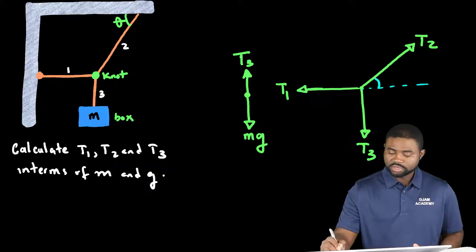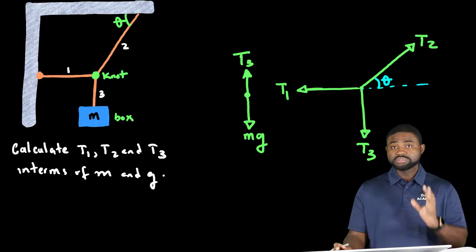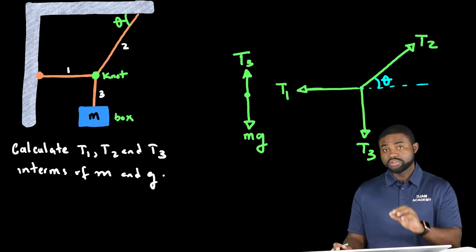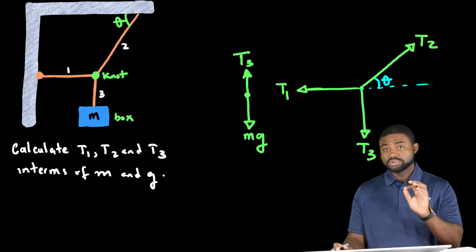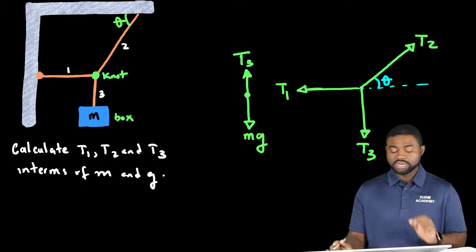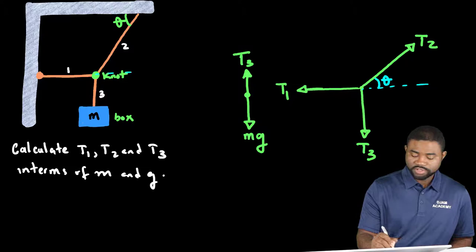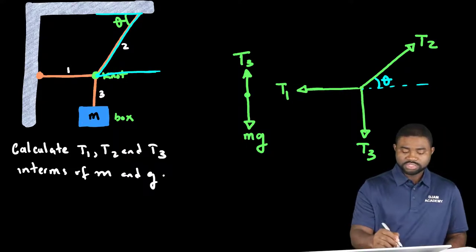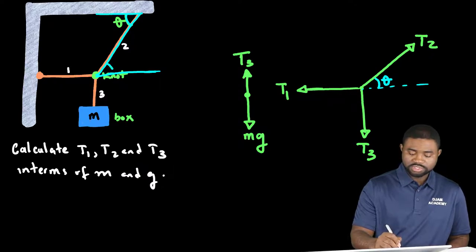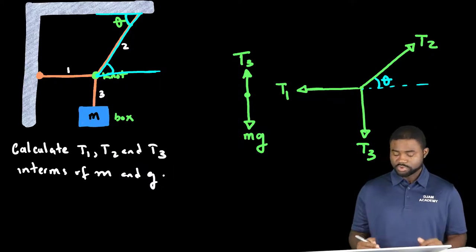Now if you observe carefully, this angle is theta. Remember, the angles under the arms of letter Z are always equal. For you to see that this is a Z, one big Z. So this angle is equal to this angle. They are corresponding angles.